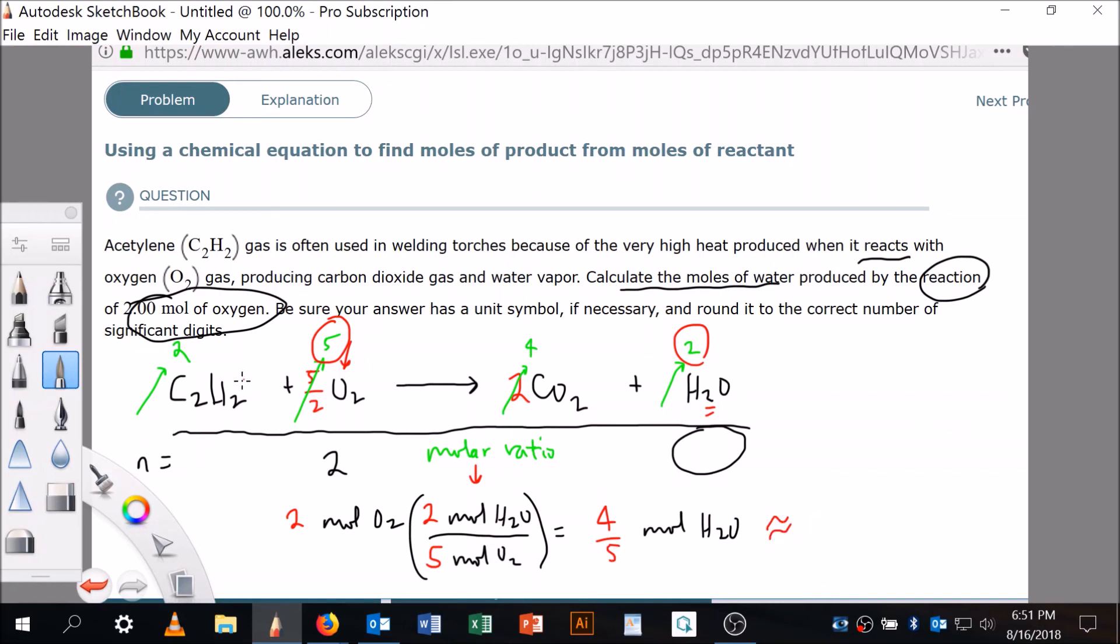I'm probably going to have to report this to three sig figs, so it looks like four fifths is actually 0.8, but it's to three sig figs so it's going to be 0.800 moles of water. All right, hope that's helpful.